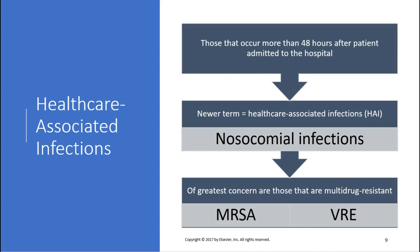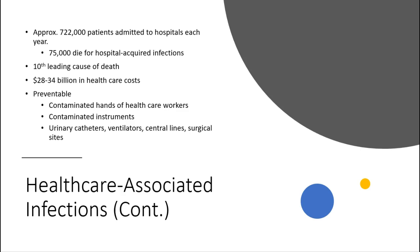Healthcare-associated infections (HAI) are those that occur more than 48 hours after the patient is admitted to the hospital. It's a newer term — HAI — which replaced nosocomial infections. The greatest concerns are MRSA and VRE. Many of these strains are resistant to any antibiotic we can give, so they can become deadly. Approximately 700,000 patients admitted to hospitals each year get HAIs, and 75,000 die from them — the 10th leading cause of death, costing about 28 to 34 billion dollars in healthcare costs. It's preventable. The biggest cause is contaminated hands of healthcare workers, so it's really important that you wash your hands constantly and wear gloves.